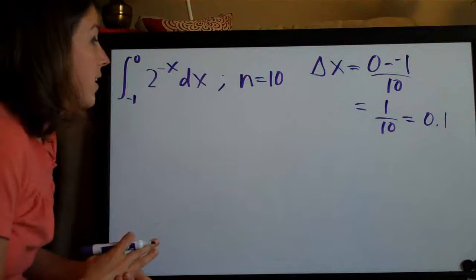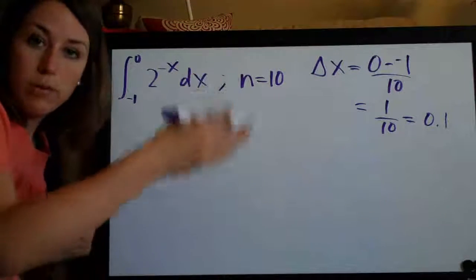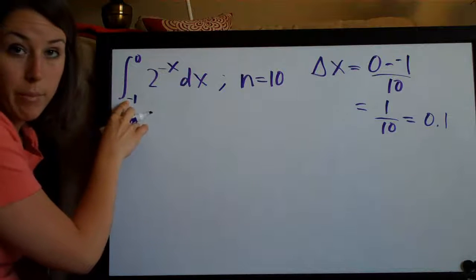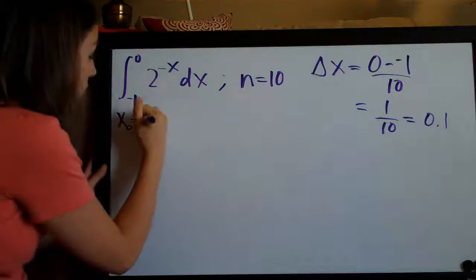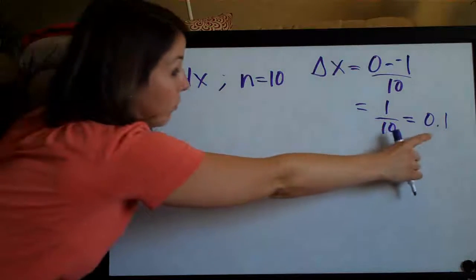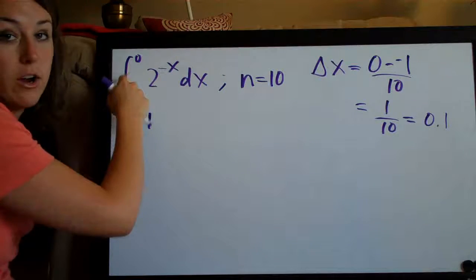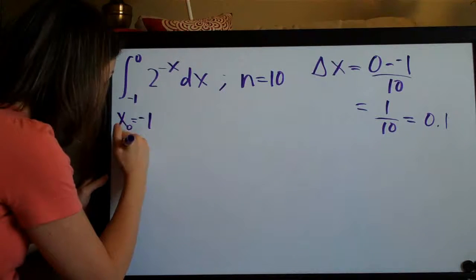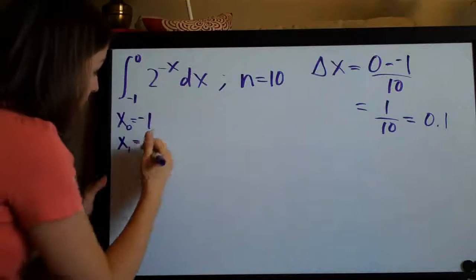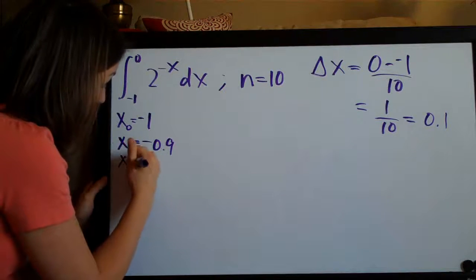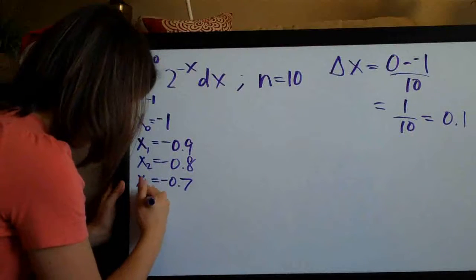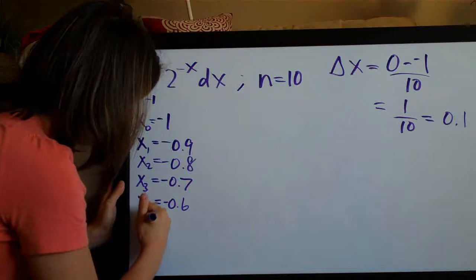The second thing we need to do is write down the division points between the trapezoids. We start with x0, which always equals the bottom number — the left-hand side of our range. Then from there we start adding increments of delta x, which in our case is 0.1, until we get to the top number. So x1 is negative 0.9, x2 is negative 0.8, x3 is negative 0.7, and we just keep adding increments of 0.1, continuing until we get to 0.